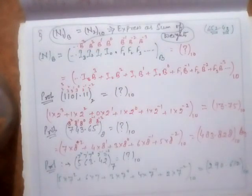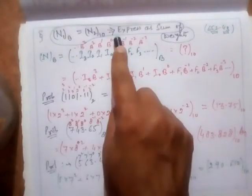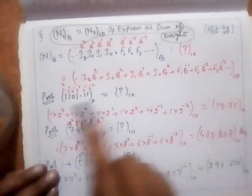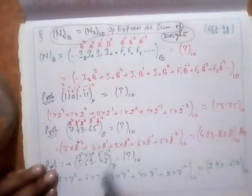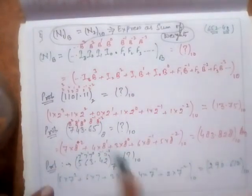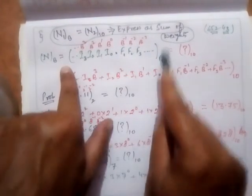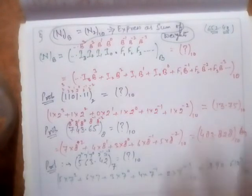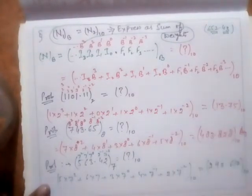So this is all about the number system and the conversion of any base to base 10 — whether binary to decimal, octal to decimal, hexadecimal to decimal, or any other base to decimal. The simple method is to express the number as a sum of its weights. I'll stop here and continue in the next lecture. Thank you.